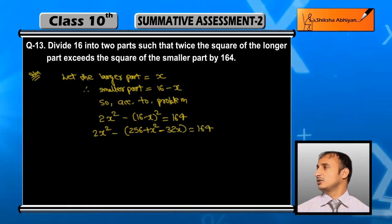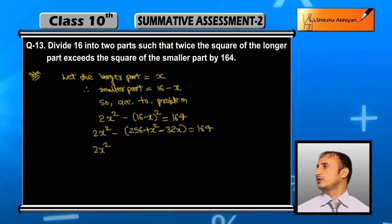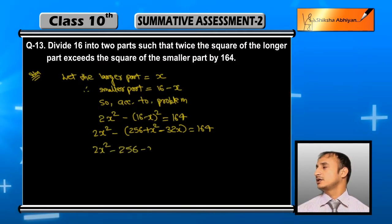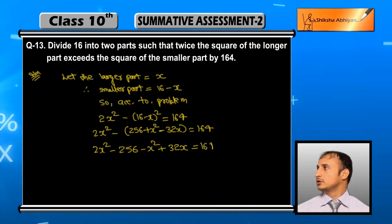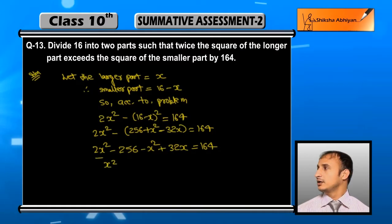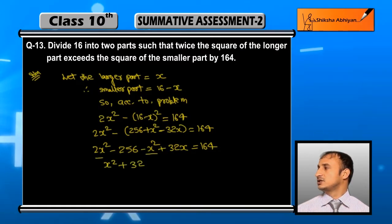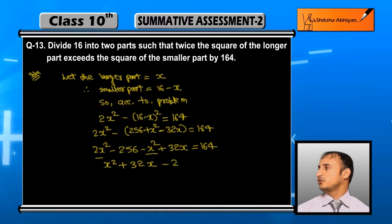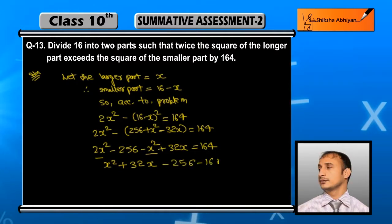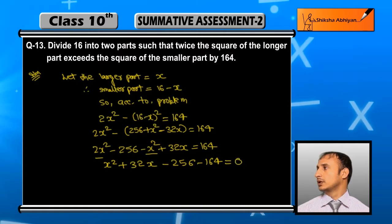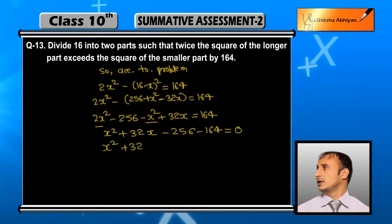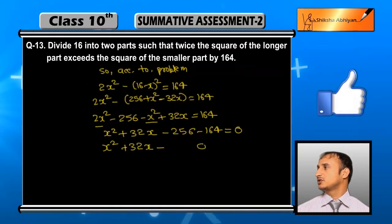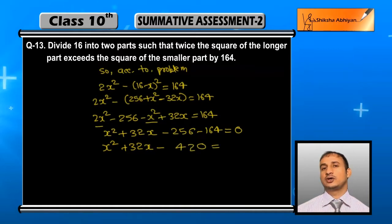This will be 2x² − 256 − x² + 32x = 164. So 2x² minus x² is x², plus 32x, minus 256 minus 164 is equal to 0. This becomes x² + 32x − 420 = 0.